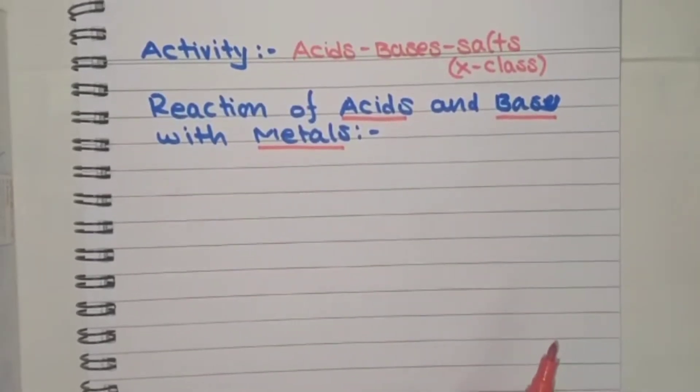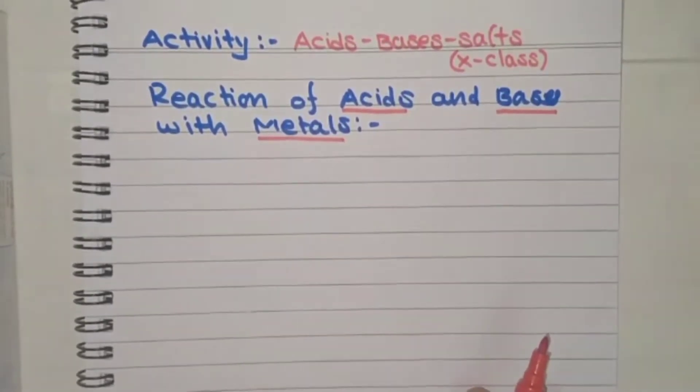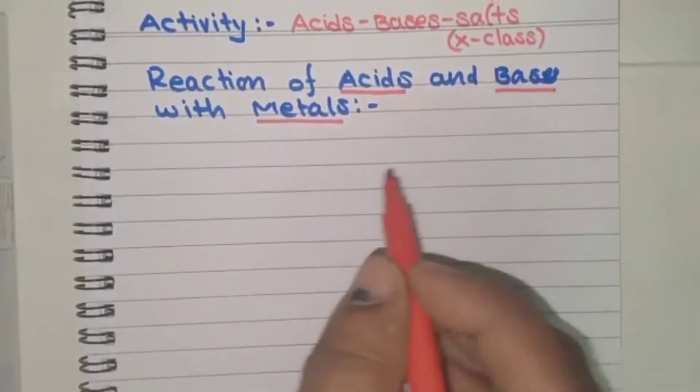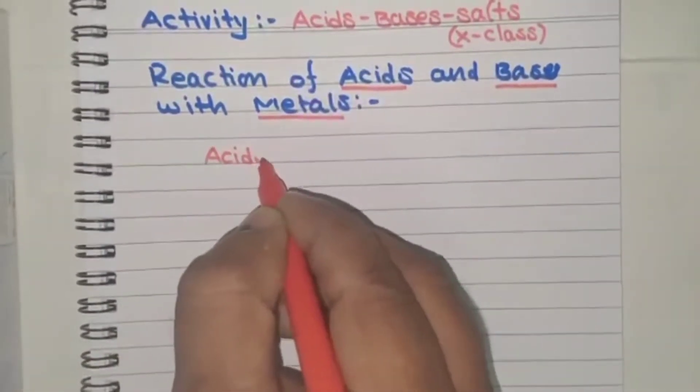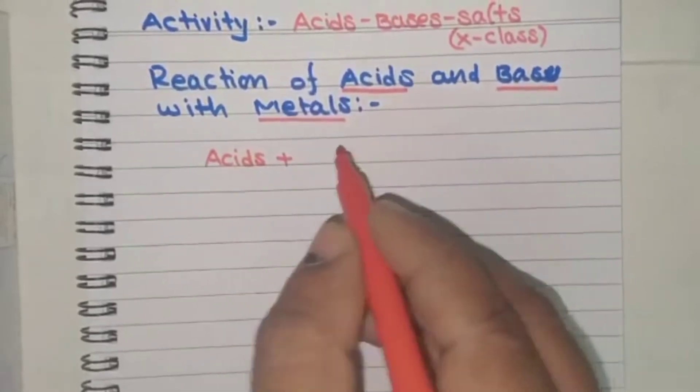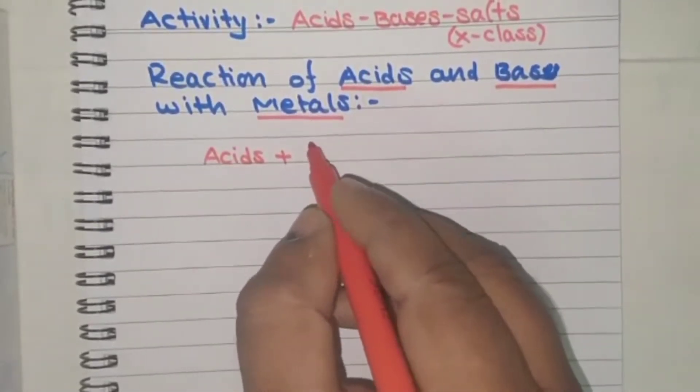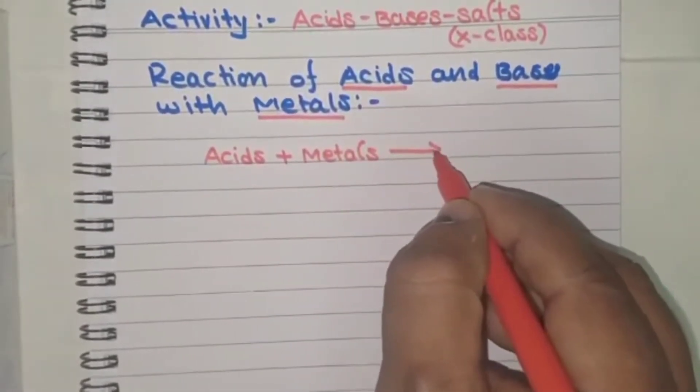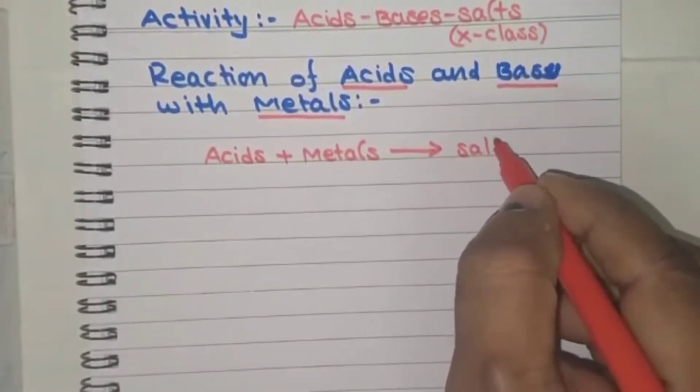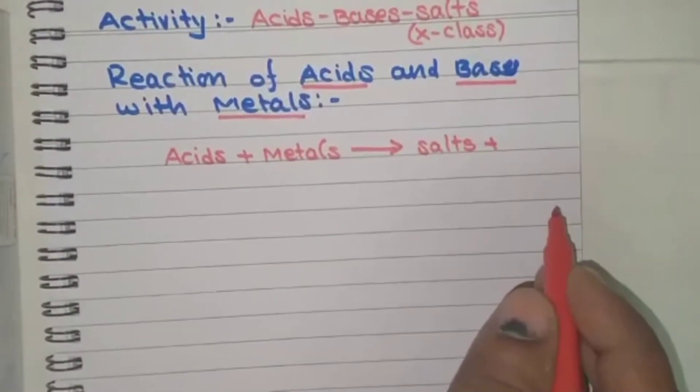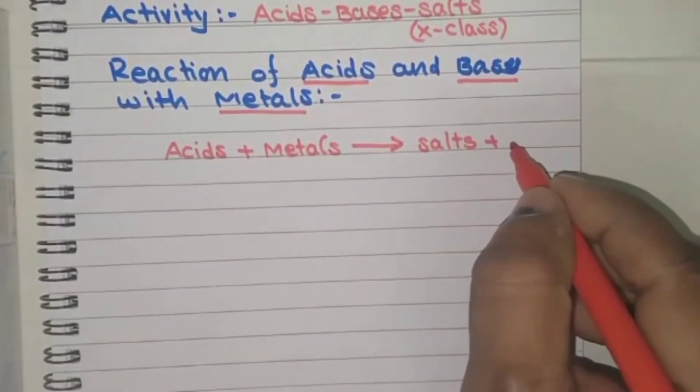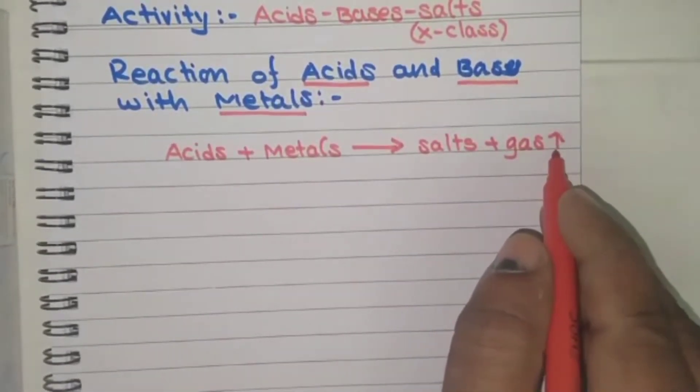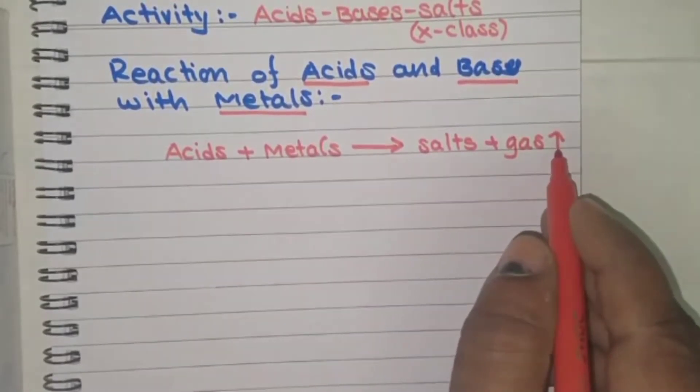What will happen? What substances are formed? We'll discuss that. In this activity, acids plus metals react with metals to form some salts and hydrogen gases involved. The gas is indicated with an upper arrow mark, that is a representation of gas.